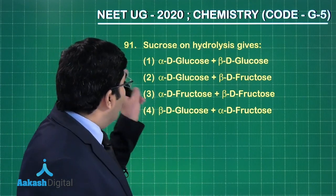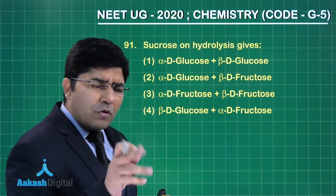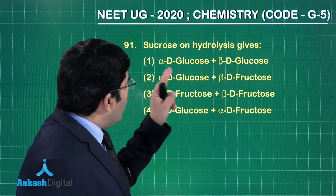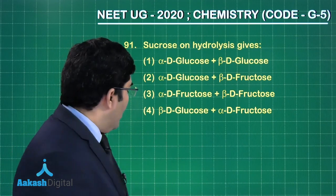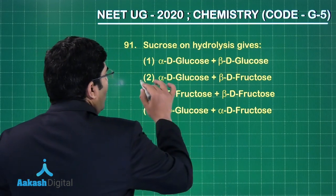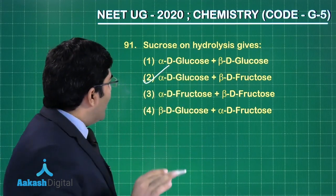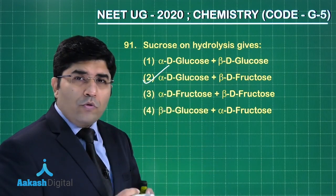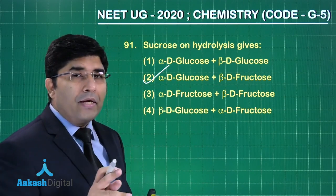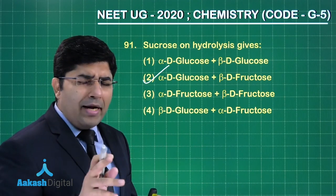The question is: sucrose on hydrolysis gives? According to NCERT, the hydrolysis of sucrose gives us alpha-D-glucose and beta-D-fructose. This question belongs to the chapter biomolecules and the topic is carbohydrates.